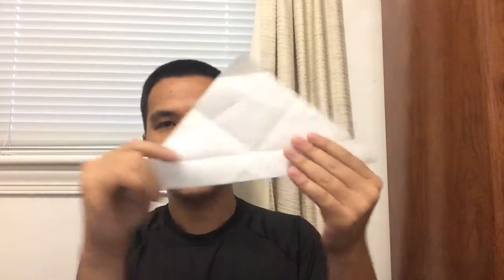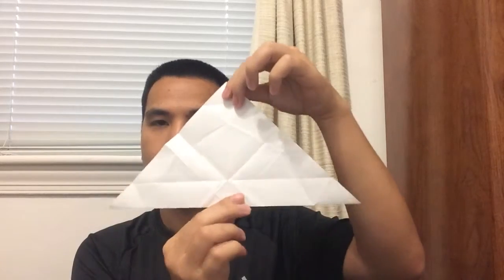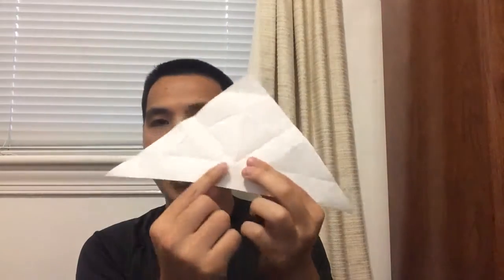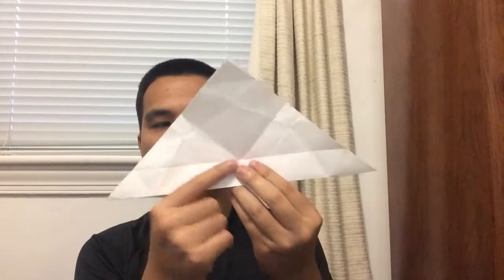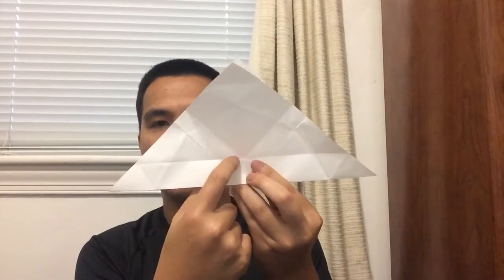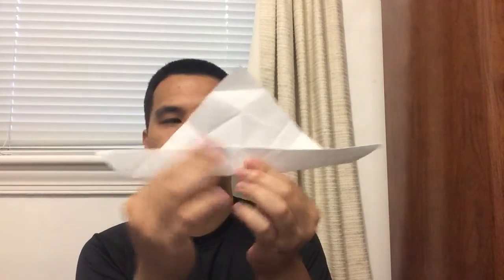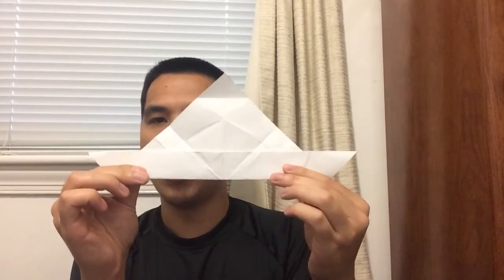The first thing you do is fold the paper in half like a big triangle, and then you're going to fold the bottom edge up. So you're going to fold it up like this. It's going to look like a boat.